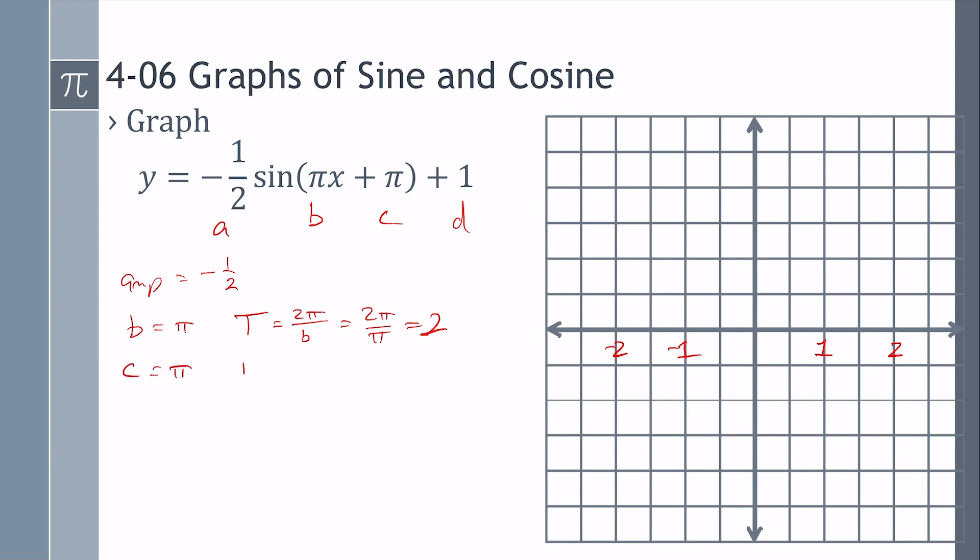C is pi. Our phase shift is C over B. Actually, C is negative pi. So it would be negative pi over pi, because it's minus a negative. So it's negative 1. So I'm going 1 towards the left.